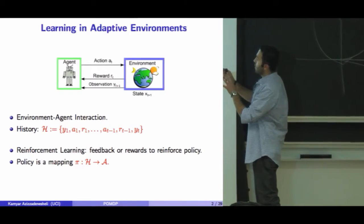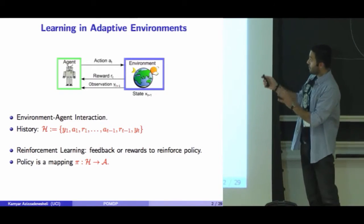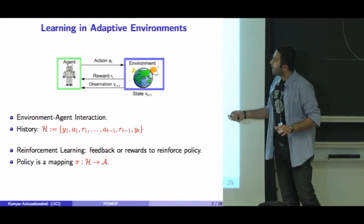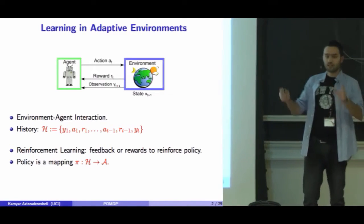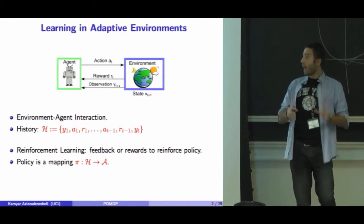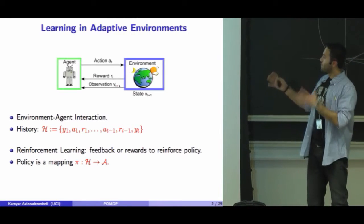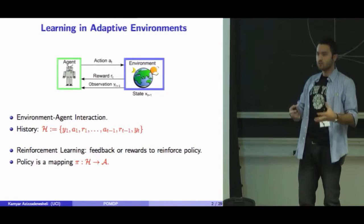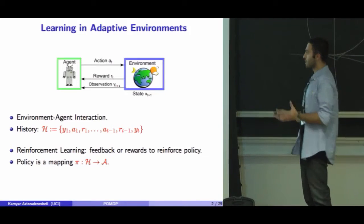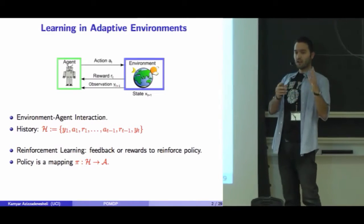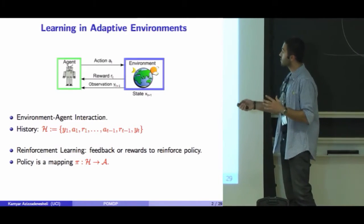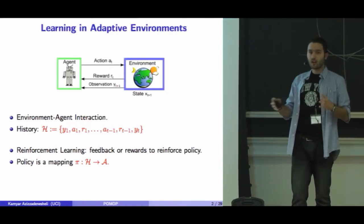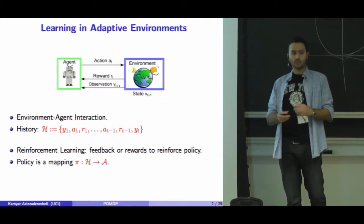In reinforcement learning, the agent receives data — observation, reward, and action — and with respect to this information, it tries to reinforce the policy. The policy is a mapping from history to the action space in such a way that we can collect as much reward as possible.